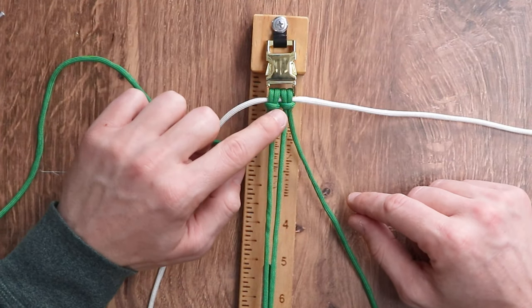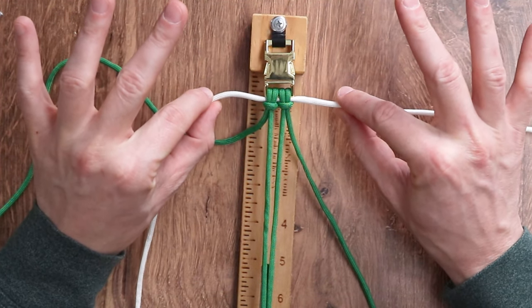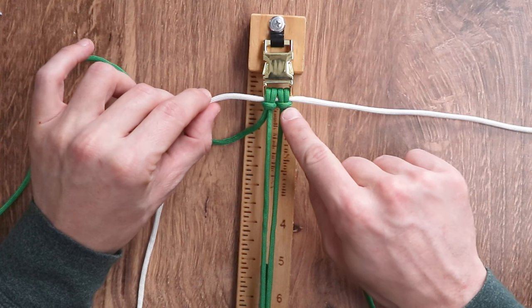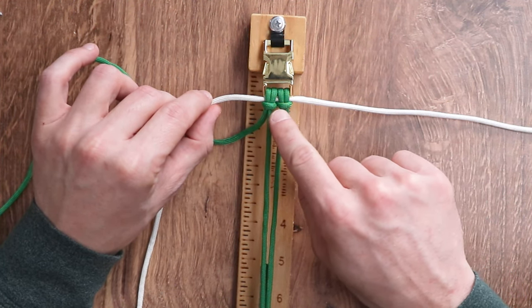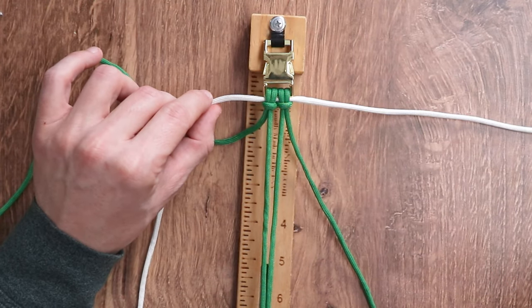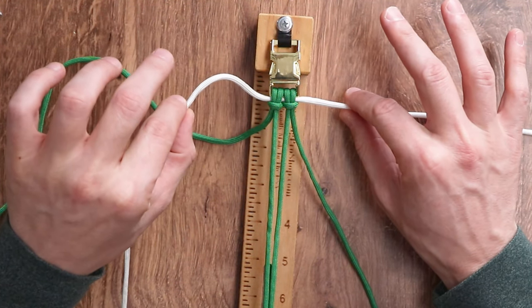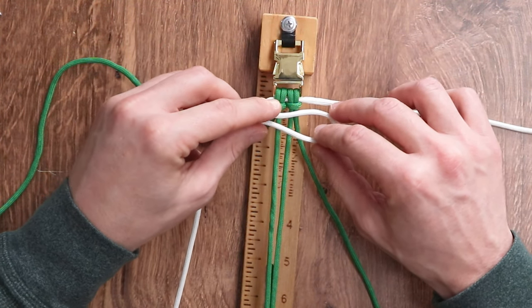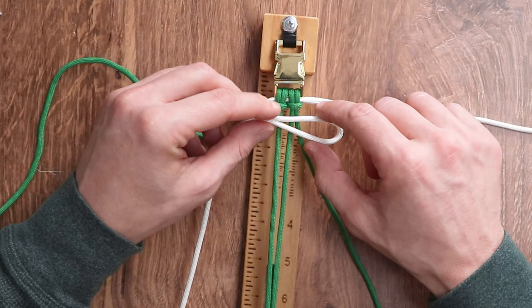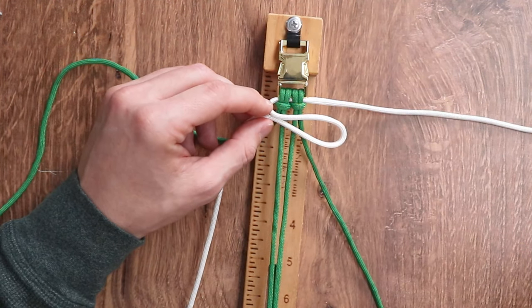So to start off our weave, we have taken the middle of our white cord and lanced it through the two cow hitch knots at the top of our bracelet. For the first step, we're going to take the left working strand of our white paracord, make a loop going over top of our two inner strands, and hold it right there.